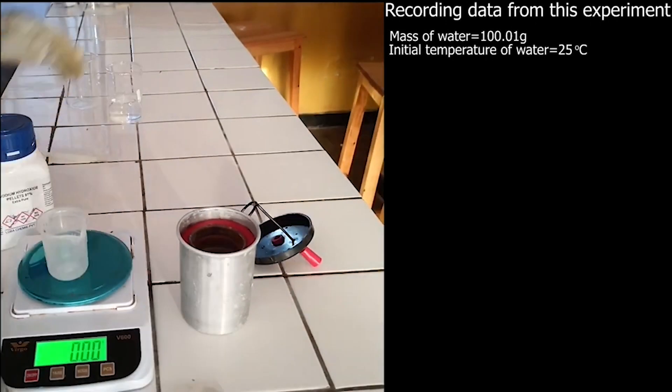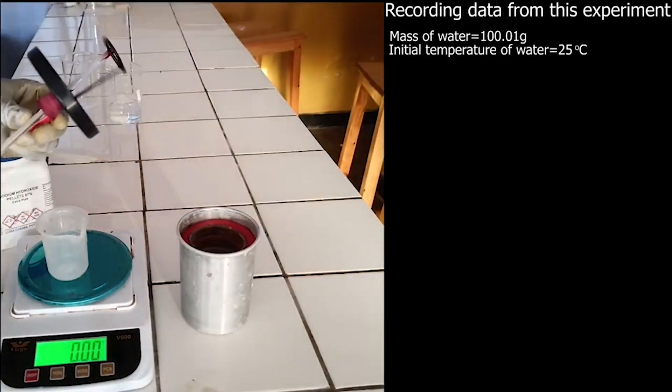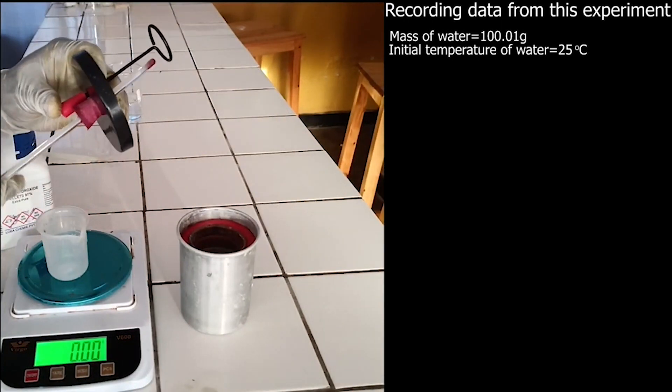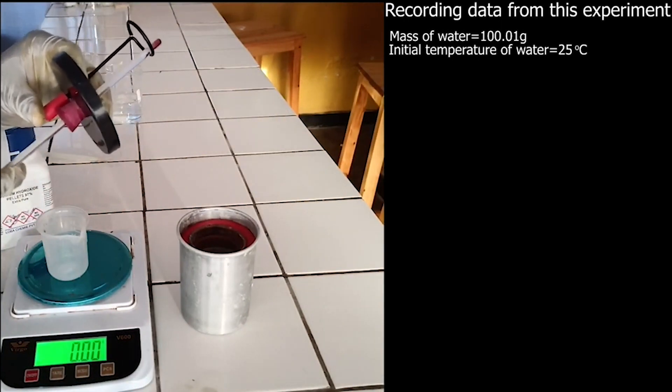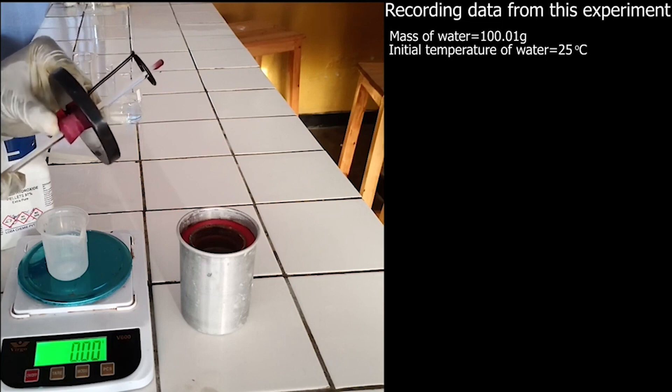The cover of cup calorimeter has two openings, one for thermometer and other for stirring rod. Put the thermometer in cover of cup calorimeter like this.